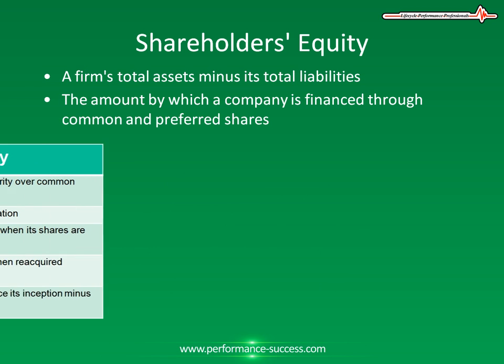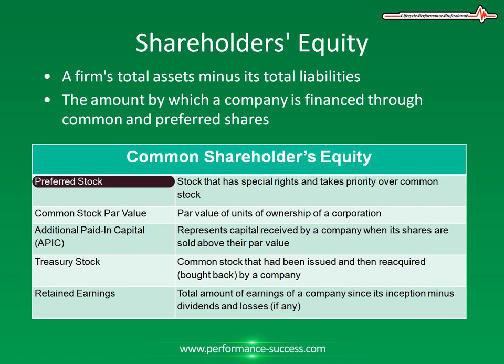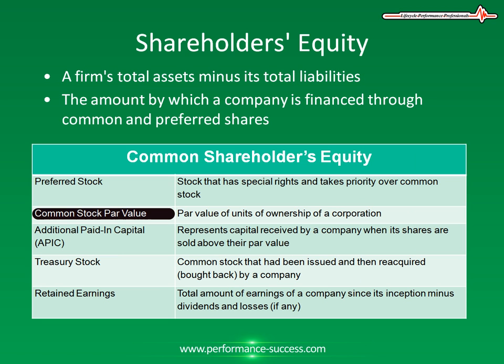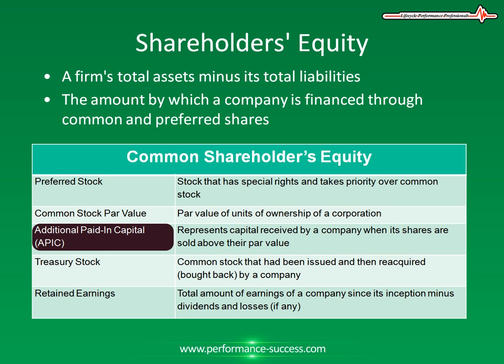Shareholders' Equity typically consists of preferred stock, which is stock that has special rights and takes priority over common stock. Common stock par value — that's the par value of units of ownership of a corporation. Additional paid-in capital, or APIC, represents capital received by a company when its shares are sold above their par value.